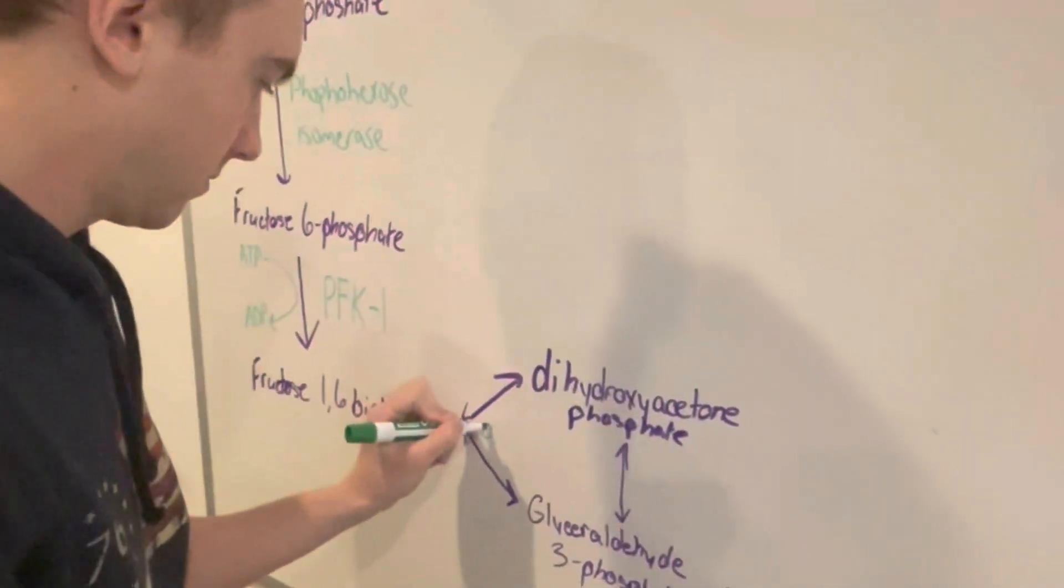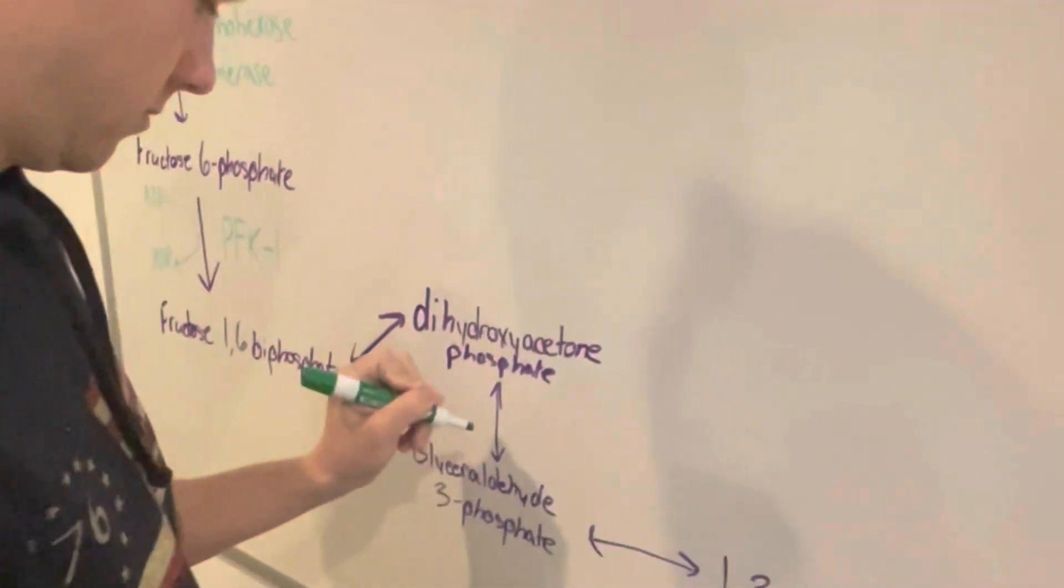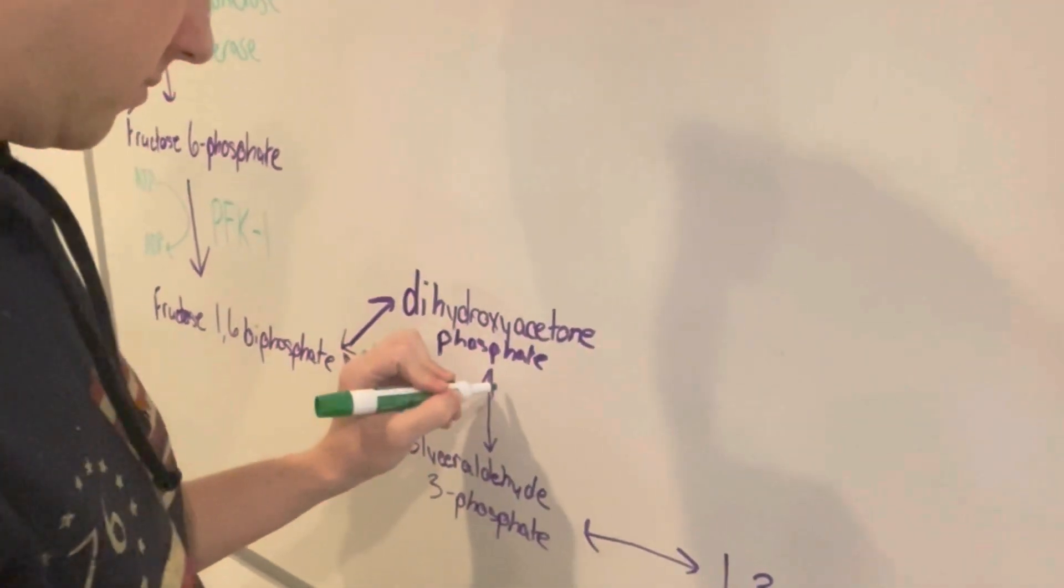The next reaction is catalyzed by an enzyme called aldolase. And then that transfer from dihydroxyacetone phosphate to glyceraldehyde-3-phosphate is by an enzyme called triose-phosphate isomerase.